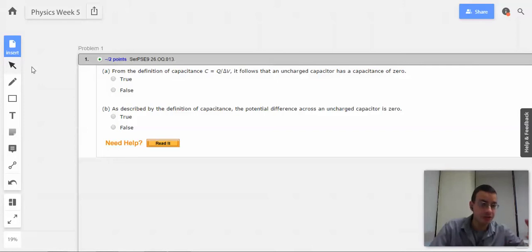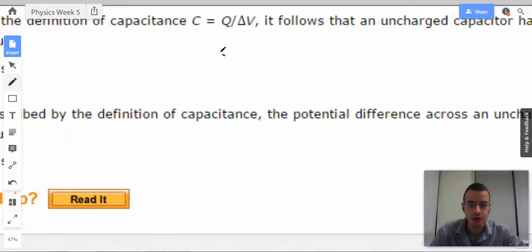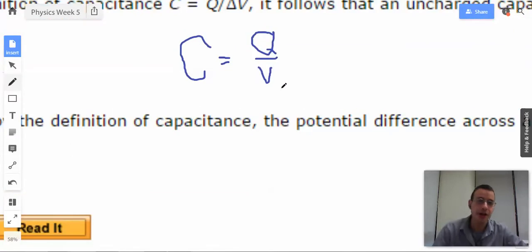So first, intuitively, your spider sensor should be going off because capacitance is due to the capacitor. So you have the geometry of the capacitor, it probably has to do with what material the charge plates are made out of, and the dielectric. So it doesn't matter how much charge is on the plates, the capacitance is going to stay the same.